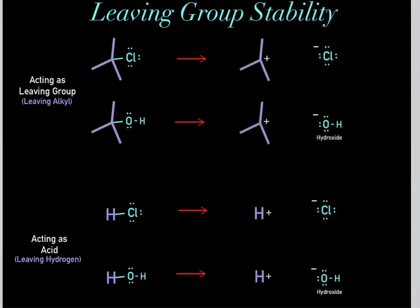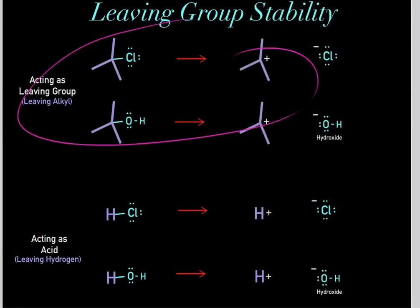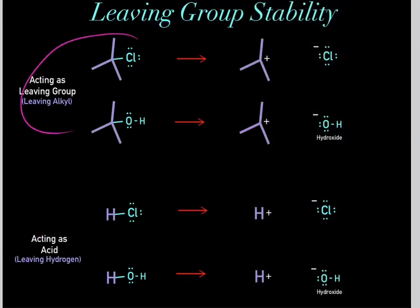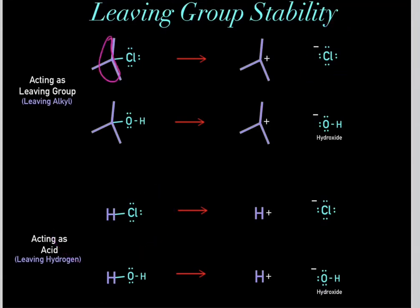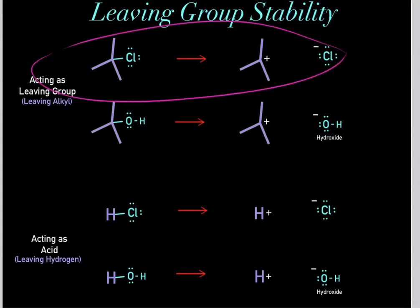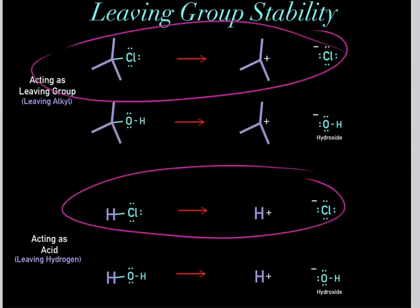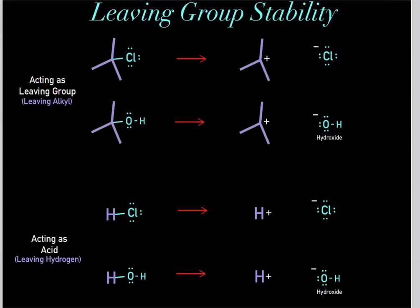These two processes are very similar. The only difference is when we have a leaving group, this chlorine leaves an alkyl group — we break a bond, the electrons fall on the chlorine, forming this chloride. When we have an acid, it's the same idea, but instead of an alkyl group, we have a hydrogen, where we protonate something, break a bond, and these electrons fall on the chlorine, forming this chloride. These are very analogous reactions.